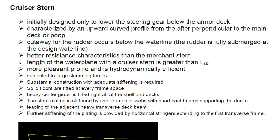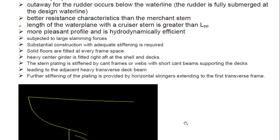The length of the waterplane with a cruiser stern is greater than LPP. It has a more pleasant profile and is hydrodynamically efficient, but is subjected to large slamming forces, so substantial construction with adequate stiffening is required. Solid floors are fitted at every frame space. A heavy center girder is fitted right aft at the shell and deck. The stern plating is stiffened by cant frames or webs with short cant beams supporting the deck leading to adjacent heavy transverse deck beams. Further stiffening is provided by horizontal stringers extending to the first transverse frame.